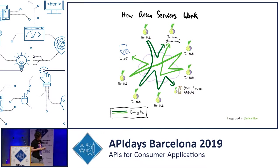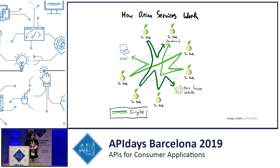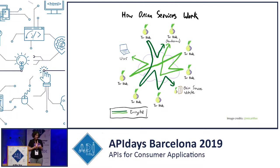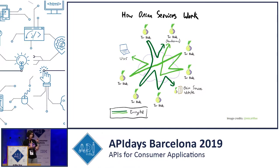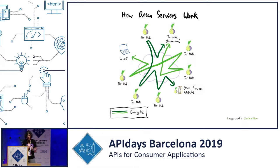So how do Onion Services actually work? An onion service will advertise itself to a directory authority, essentially saying 'here I am.' A client somehow learns of the existence of an onion service, and the client will pick a meeting point or rendezvous where both are going to meet to exchange data. Both the onion service and the client pick a path of three nodes across the Tor network to meet at the rendezvous point.